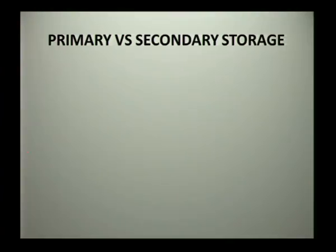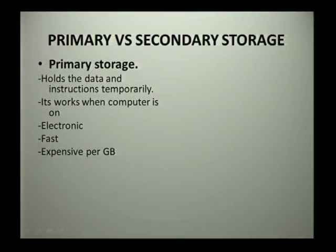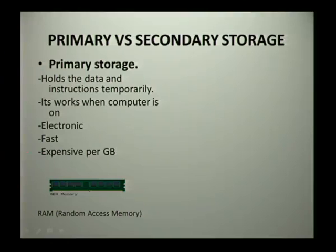Welcome to our lesson on systems technology. We are focusing on storage: how we need to use it, and the different types. Storage differs according to what it stores. We have primary storage and secondary storage. Primary storage holds data and instructions temporarily. It works when the computer is on, it is electronic, it's fast, and it's expensive per gigabyte. An example of primary storage is RAM.